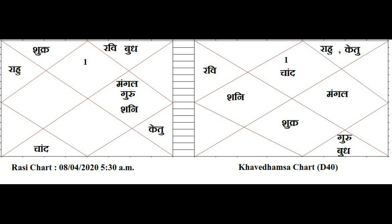Next is Shukra (Venus): in Rasi it is placed in Taurus, and in Khavedamsa it is placed in Libra, so they are 6-8 to each other — it is weak. And Moon is placed in Virgo in Rasi and Aries in D40, so it is also weaker.